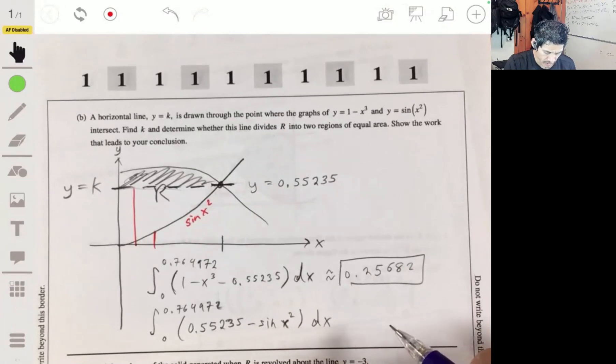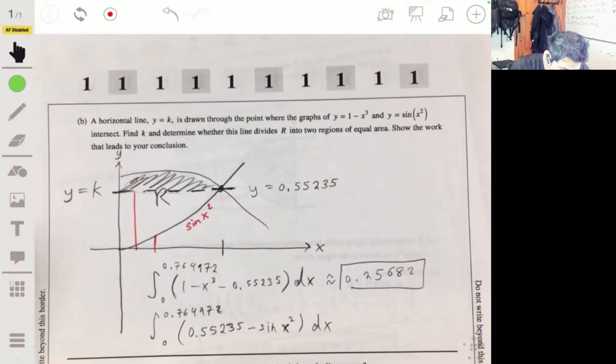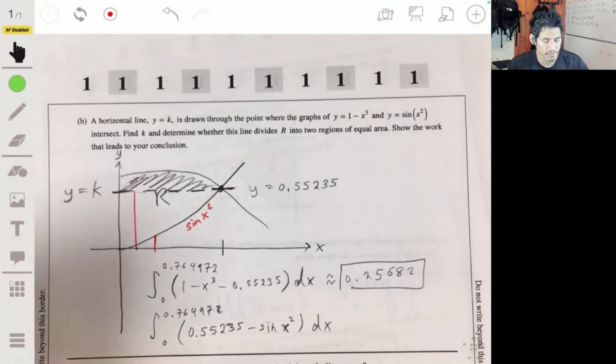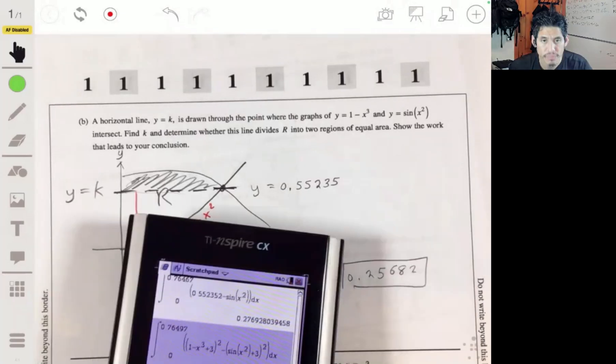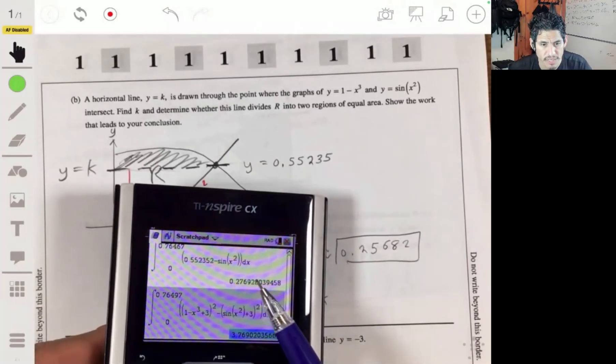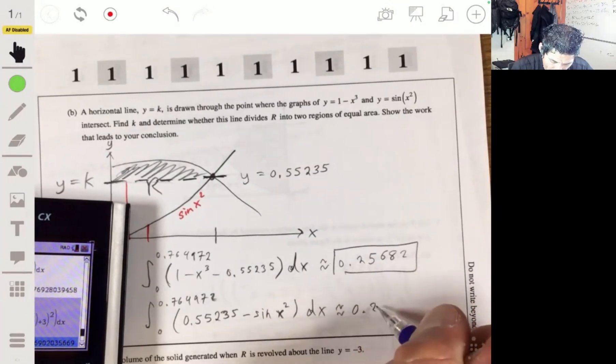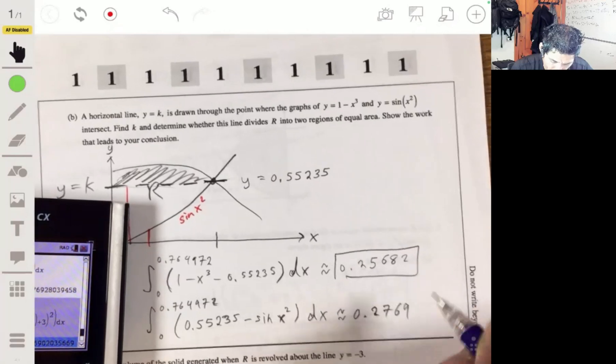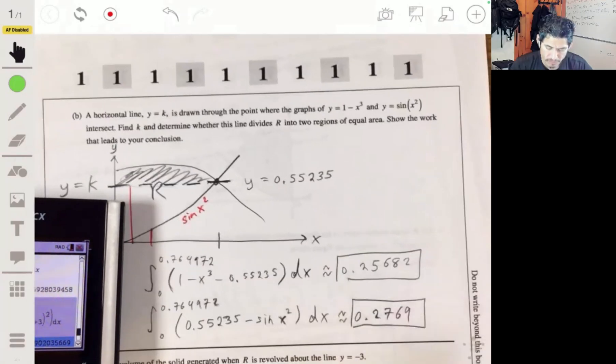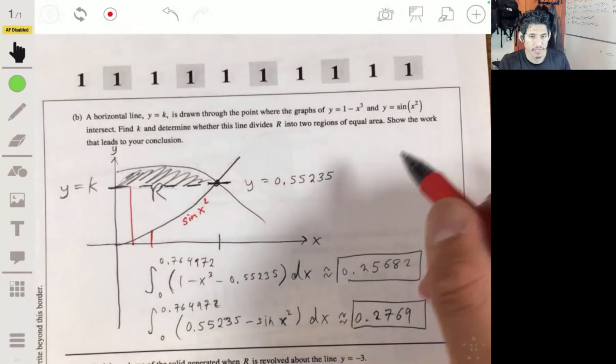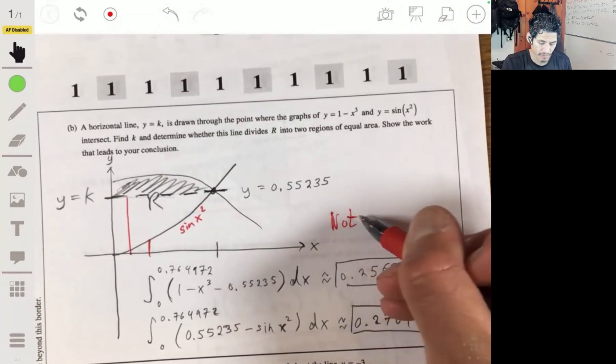And for this guy, we got 0.2, was a little bit bigger. We got 0.27, 0.2769-ish. So they're not equal. Let's not divide that region in half.